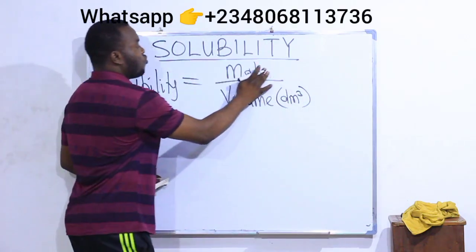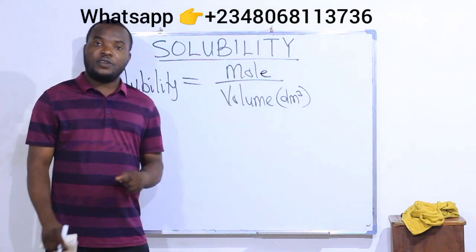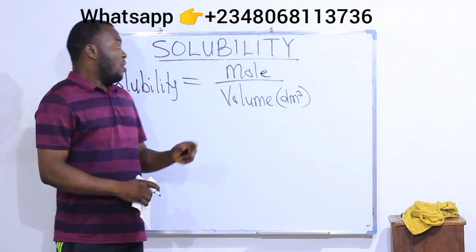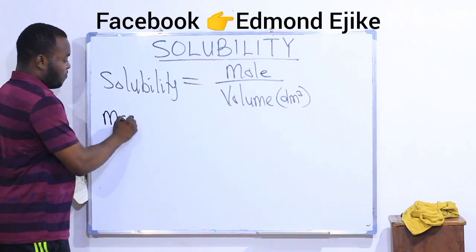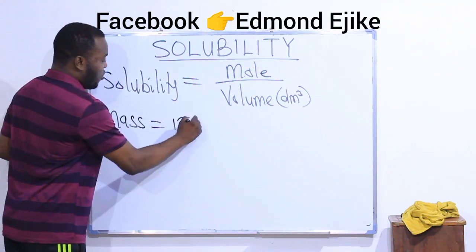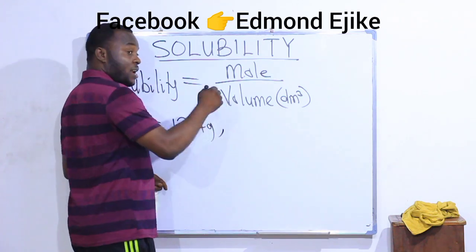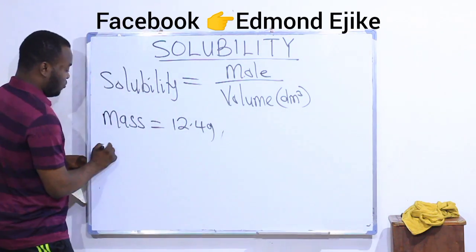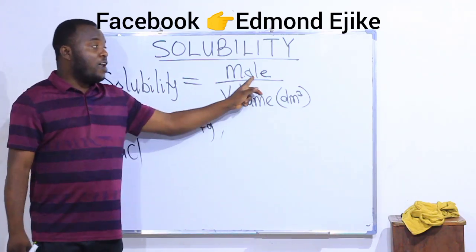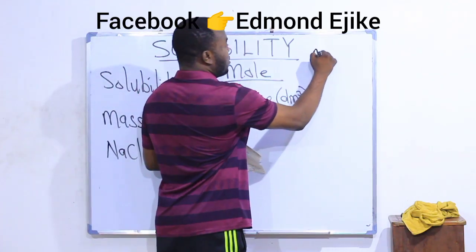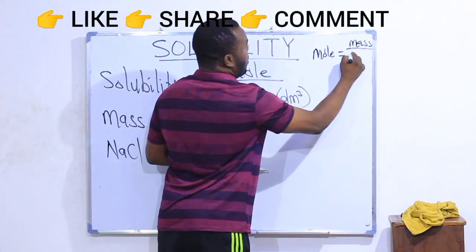Now in this question, we are not given moles, but we are given mass. We are told that mass is equal to 12.4 grams, and we are also told that the compound is sodium chloride. To find moles, remember that mole is equal to the given mass divided by molar mass.